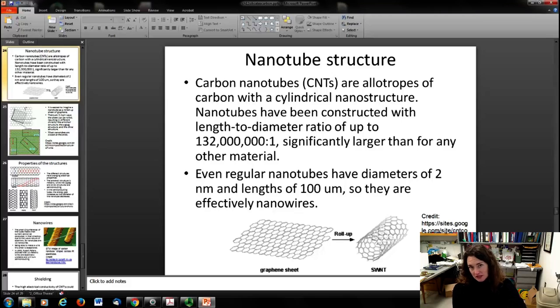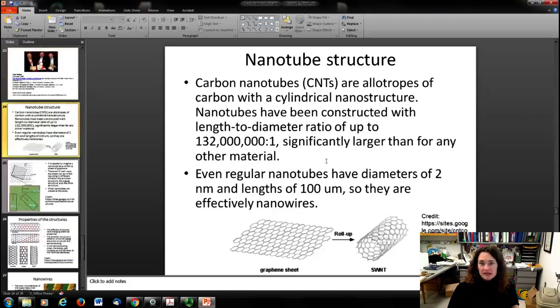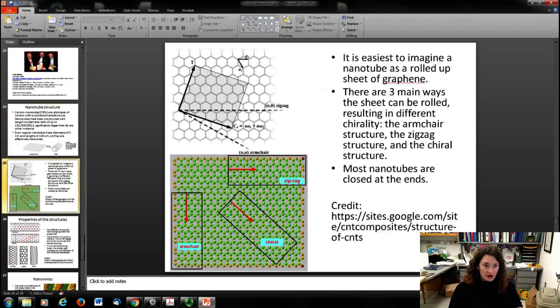Carbon nanotubes, often abbreviated CNTs because material scientists just can't resist making an acronym, are allotropes of carbon with this cylindrical nanostructure. Nanotubes are really fascinating because their ratio of length to diameter can be 132 million to one, and that's significantly larger than for any other material, so they make great nanowires. Regular nanotubes only have diameters of about two nanometers and can have lengths up to 100 micrometers depending upon how you fabricate them. So basically you've made yourself a nanowire. Another fun fact about nanotubes is that you can roll the graphene sheet up in different ways, and depending upon what's called the chirality of the nanotube—that means how you roll it up—it can be either insulating, a semiconductor, or an excellent conductor of electricity.